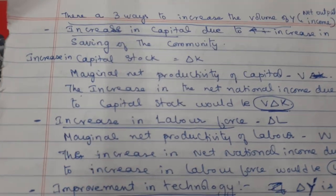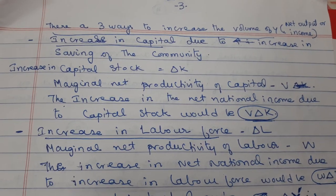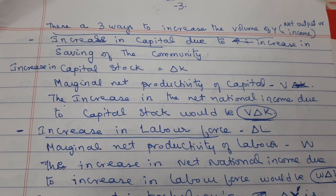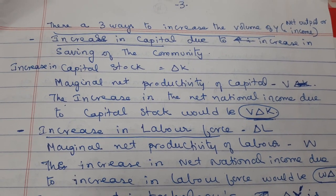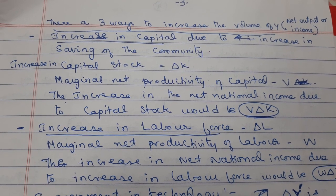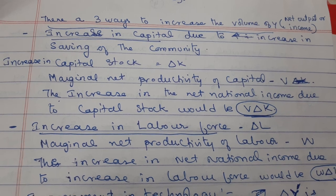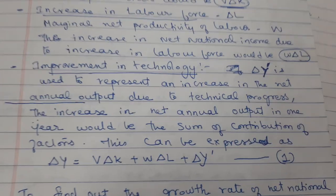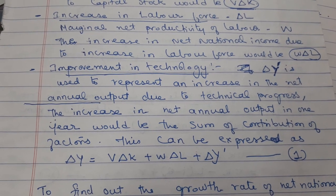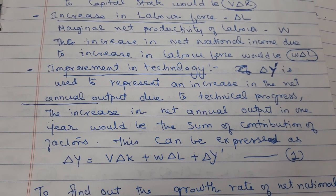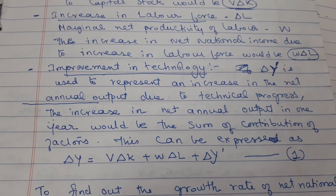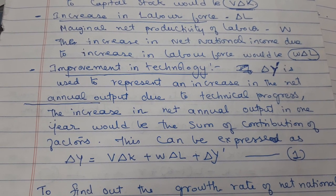There are three ways to increase the volume of Y, that is net output or net national income: increase in capital, increase in labour force, and improvement in technology. Increase in capital is due to increase in savings of the community. The increase in net national income due to capital stock is V·ΔK, where V is the marginal productivity of capital. The increase due to labour force ΔL is W·ΔL, where W is the marginal net productivity of labour.